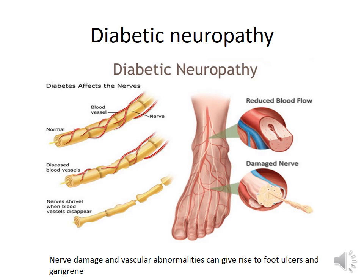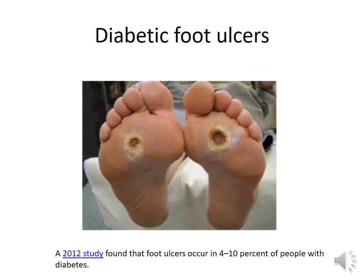Diabetic neuropathy: blood vessels supplying the nerves are affected, giving rise to ischemic changes and nerve damage. Diabetic neuropathy presents as tingling sensation, paresthesias, or loss of sensation. Nerve damage combined with vascular abnormalities can give rise to foot ulcers and gangrene. Diabetic foot ulcers are seen in 4–10% of patients with diabetes, and may develop in 5 out of every 1,000 people with diabetes, sometimes requiring amputation.